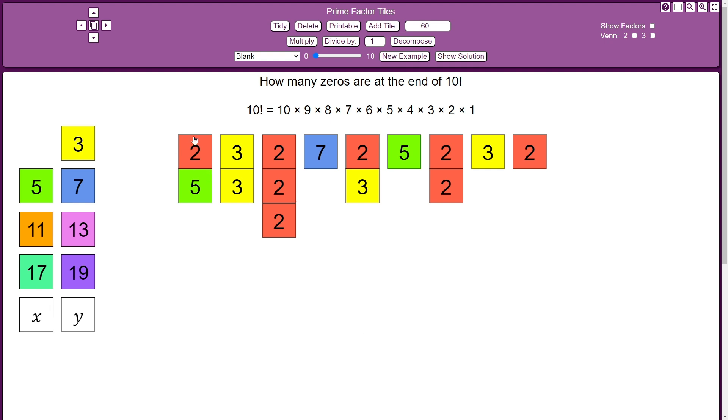So if I multiply all these prime factors together, I get the value of 10 factorial. But how many zeros would be at the end of it? And to figure that out,